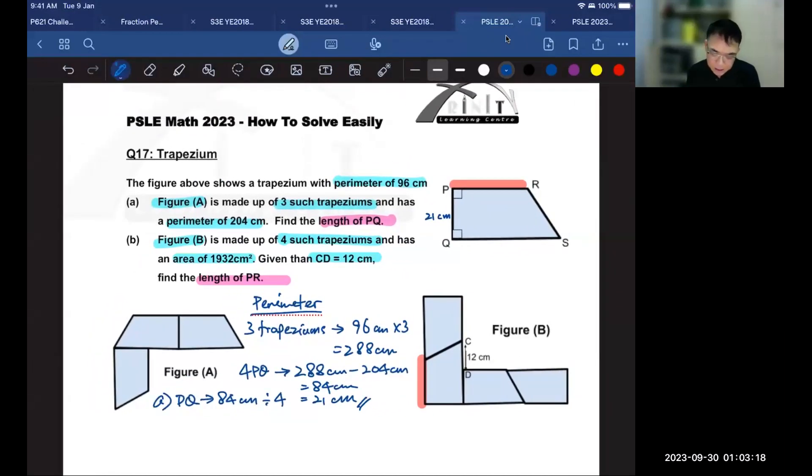In part B, it says that there are four such trapeziums. The area is 1932. And this is 12 centimeters. So with that, your goal is to find the length of PR. PR is this red line, which I showed you earlier is the equivalent of this line.